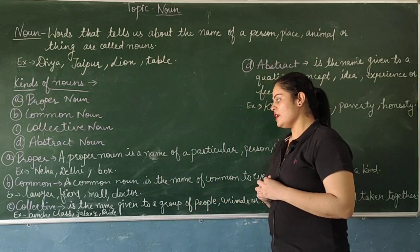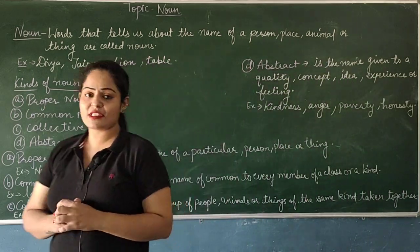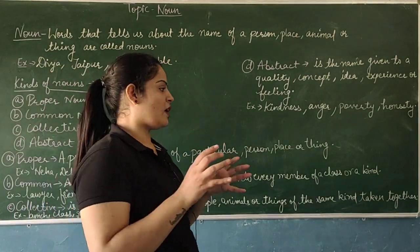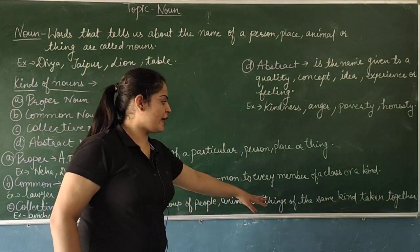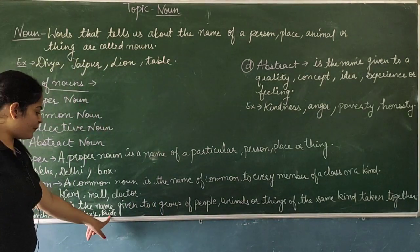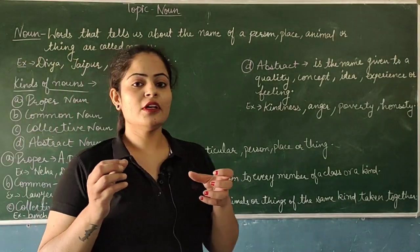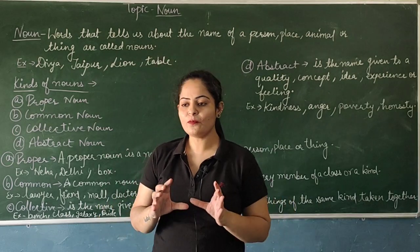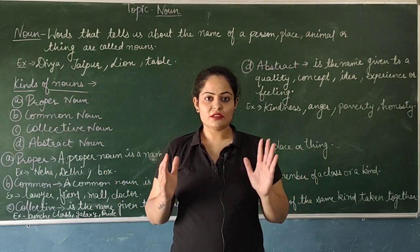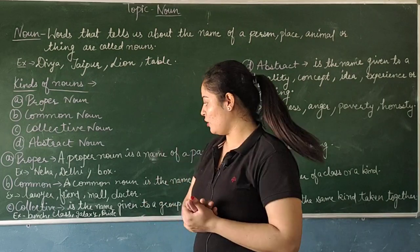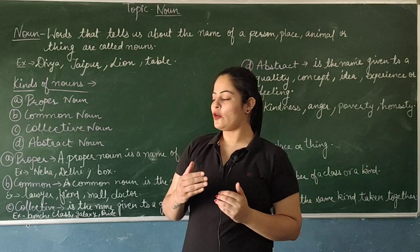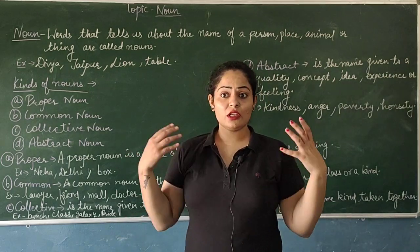Third is collective noun, which is a name given to a group of people, animals or things of the same kind taken together. For example: bunch — bunch of grapes, it's a group. Class — class of students, the whole class of students. Galaxy — galaxy of stars, there are a lot of stars. Pride — pride of lions.